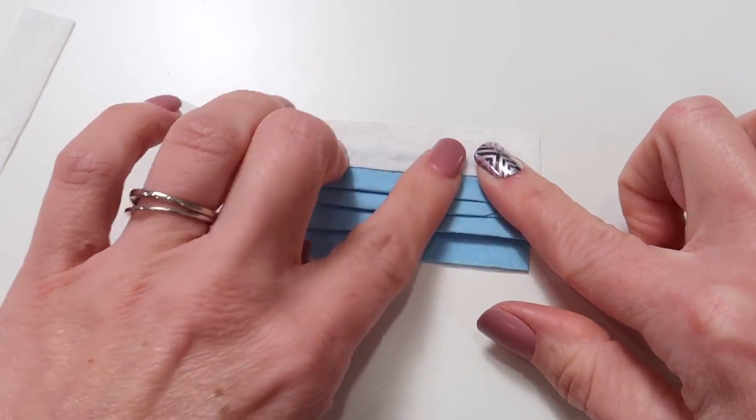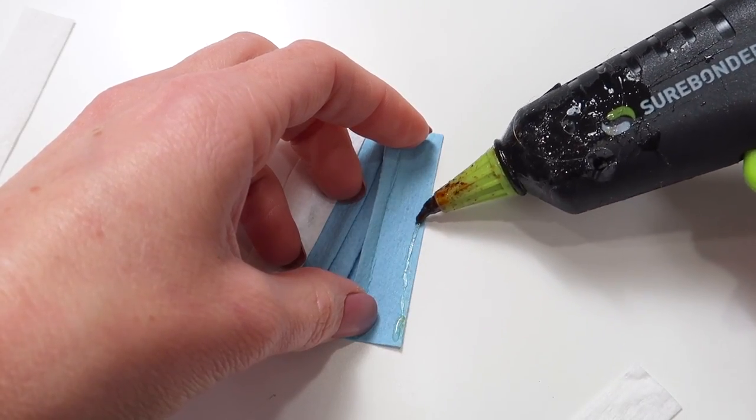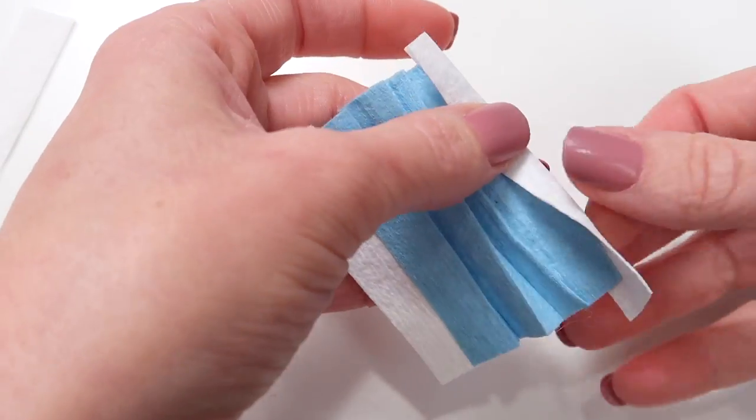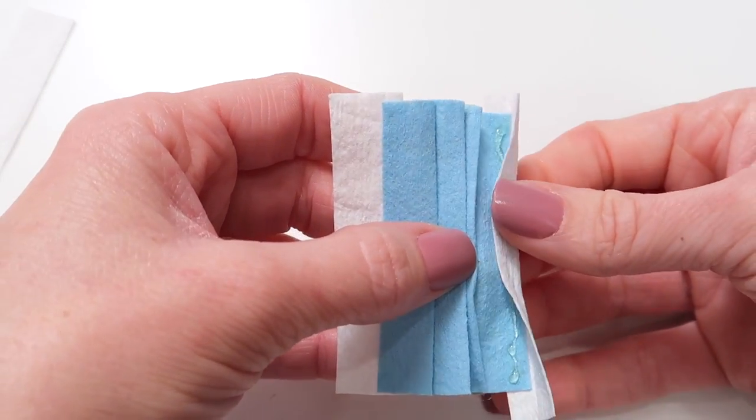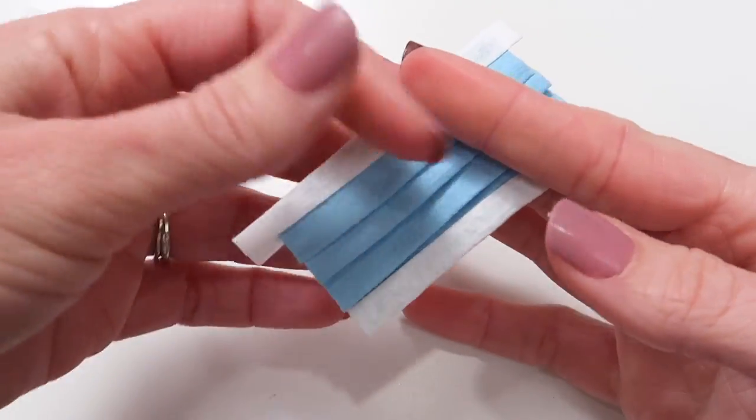Press all your folds back into place, and now flip your mask over. You are just going to fold the white paper towel onto itself.